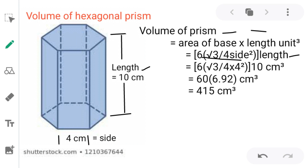√3/4 times side squared is the area of an equilateral triangle. There are 6 equilateral triangles in a hexagonal area, so it is multiplied by the number 6.